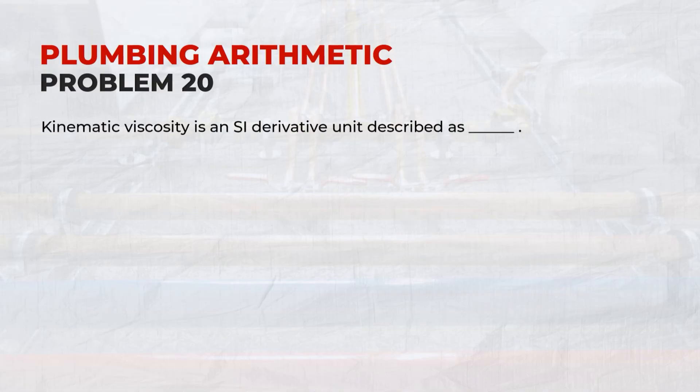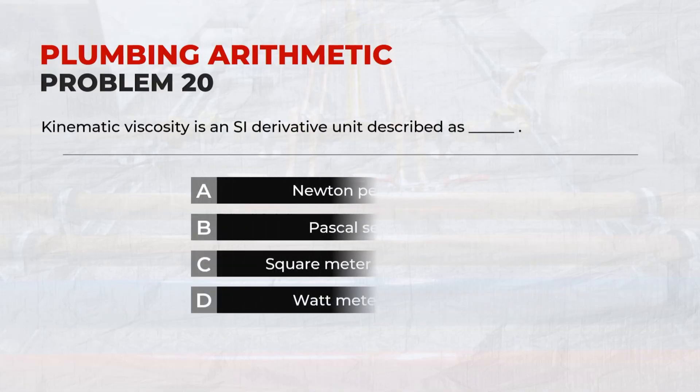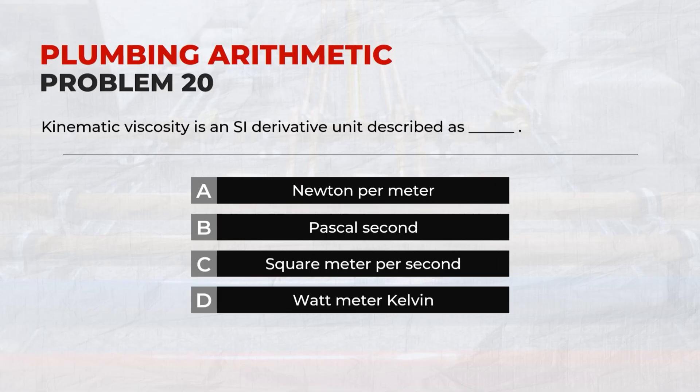Problem 20: Kinematic viscosity is an SI derivative unit described as? Answer: C, square meter per second.